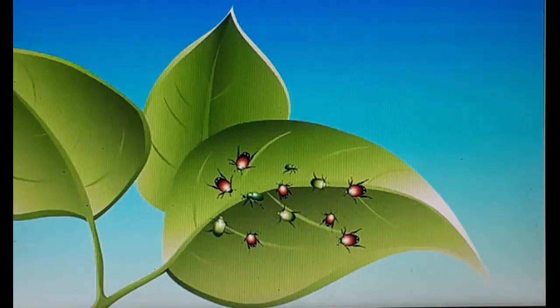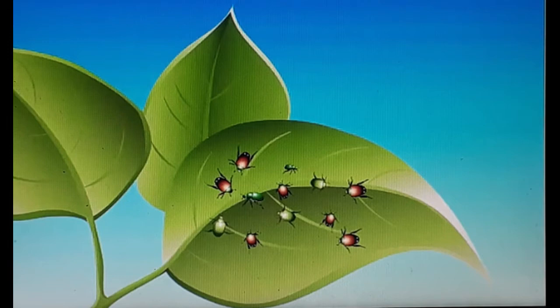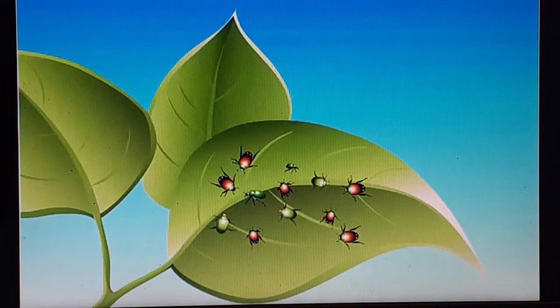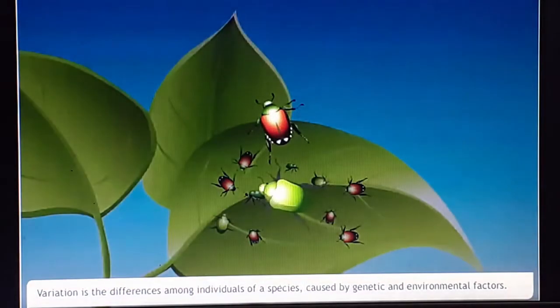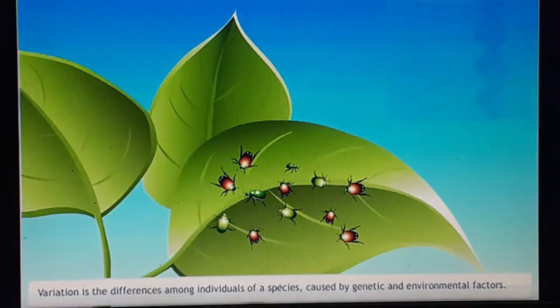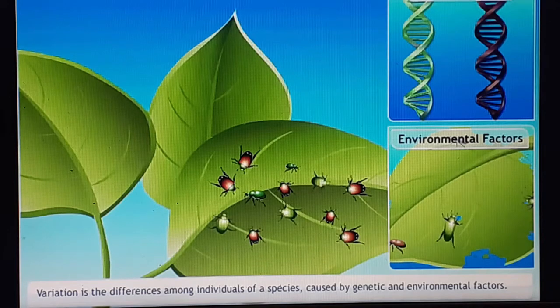Next we need to learn about variations. Variation is the differences among individuals of a species caused by genetic and environmental factors. That means in a group, one member may be a little different from others — that is known as variation. Evolution requires genetic variation.